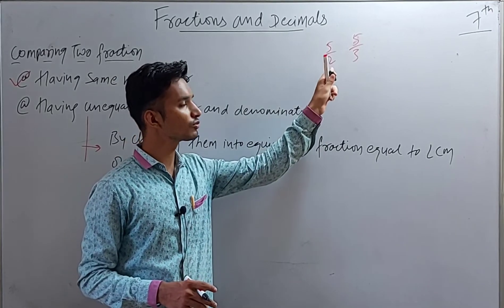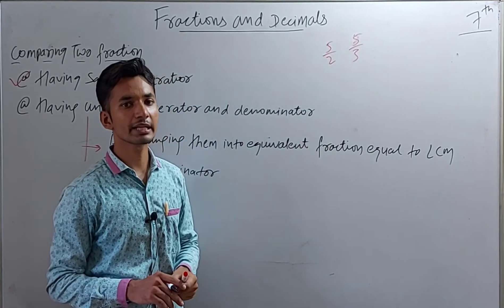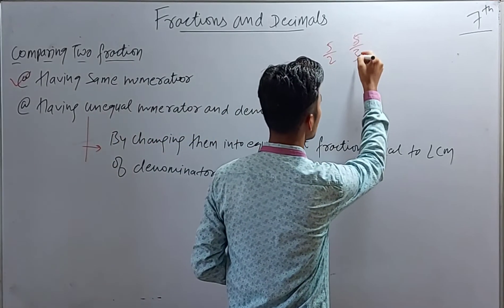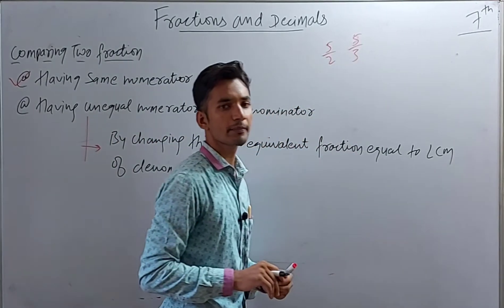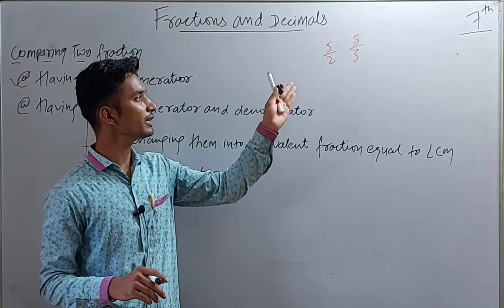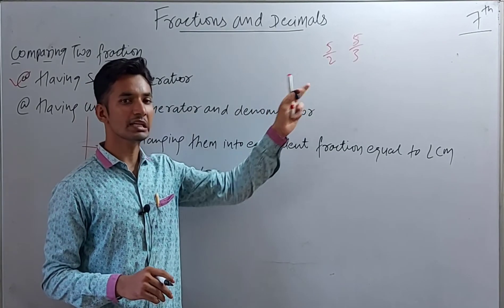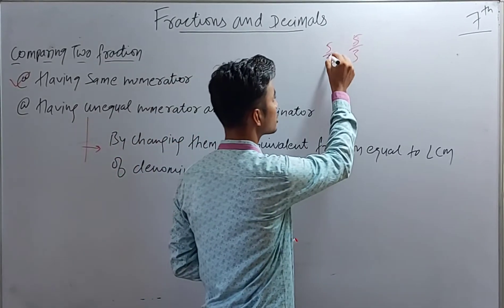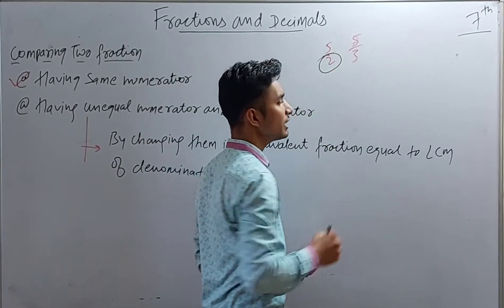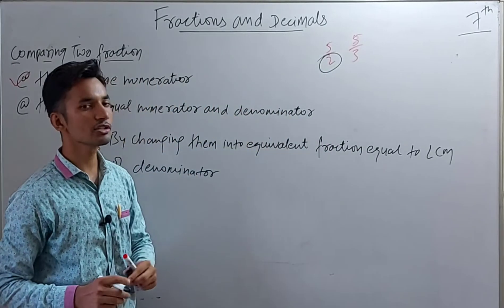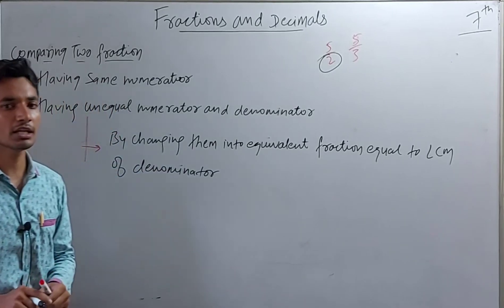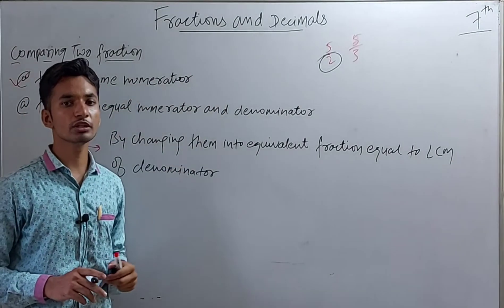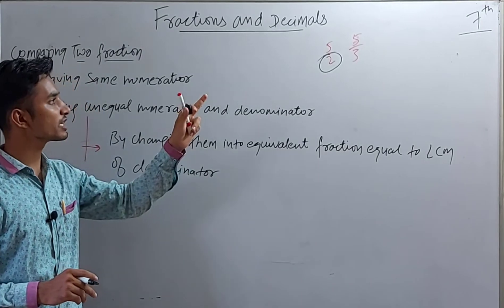The fraction that contains the smaller denominator is the greatest. For example, 5/2 and 5/3 — whichever fraction has the smaller value of the denominator, that fraction is going to be the greatest.